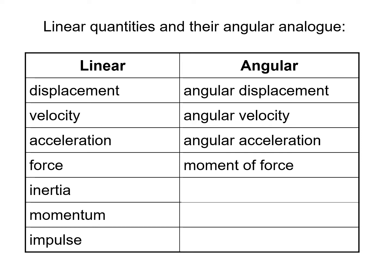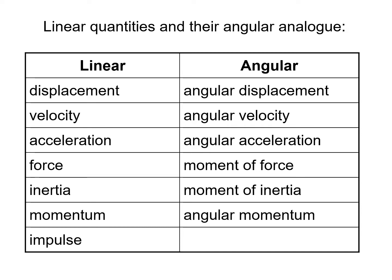For linear inertia we have moment of inertia for angular kinetics. We have linear momentum and also angular momentum. We have linear impulse and angular impulse. Much of the calculations are very similar between linear and angular kinetics — we're really just swapping out the units.